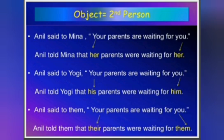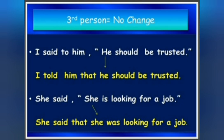Another example: 'Anil said to Yogi, your parents are waiting for you.' Here 'your' in double inverted commas changes to 'his,' giving 'Anil told Yogi that his parents were waiting for him.' For third person, there is no change. Like, 'I said to him, he should be trusted' becomes 'I told him that he should be trusted.' Another: 'She said, she is looking for a job' becomes 'She said that she was looking for a job.'